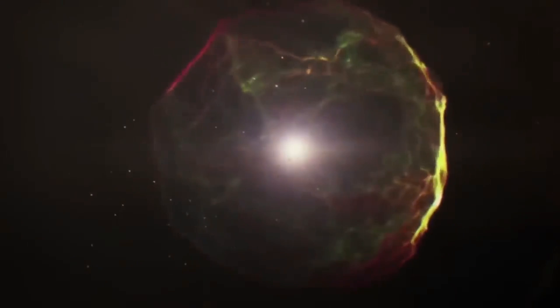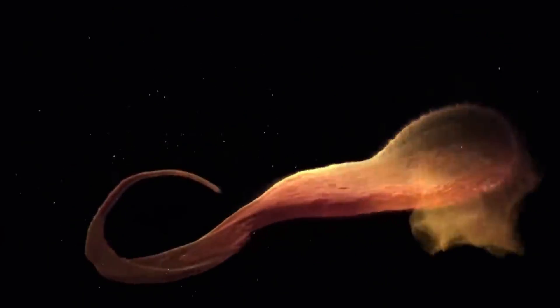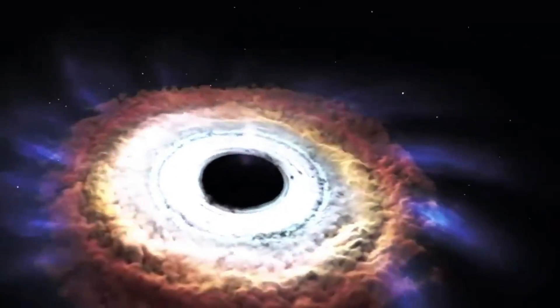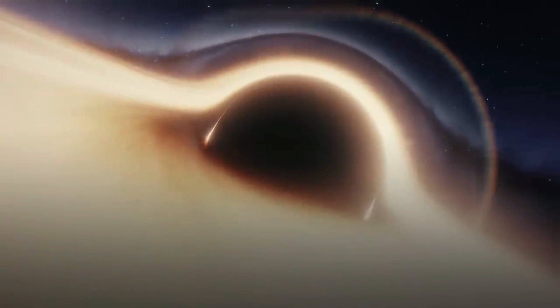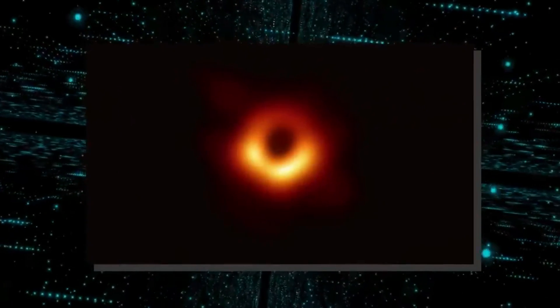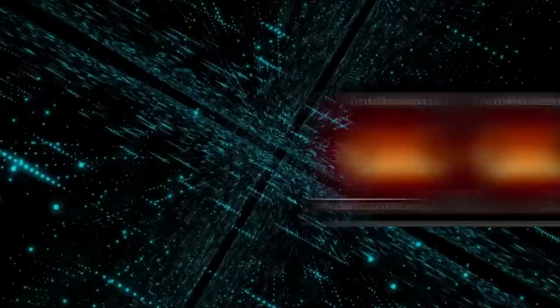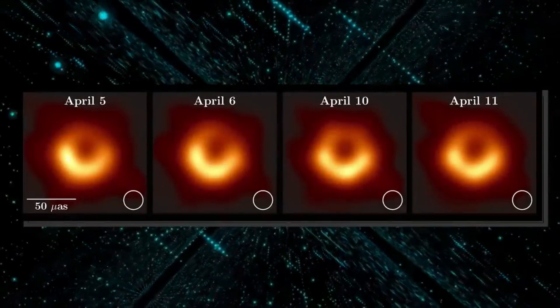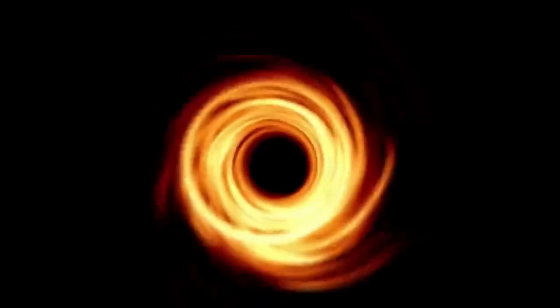Black holes are classified into three types: stellar, intermediate, or supermassive. Stellar black holes are formed when a star collapses at the end of its life cycle. These black holes have a few times the mass of the sun and are small in comparison to the other types. Intermediate black holes are bigger than stellar black holes but smaller than supermassive black holes. These black holes are still not well understood and are the subject of much research today.